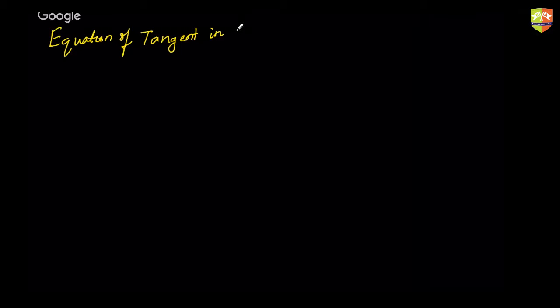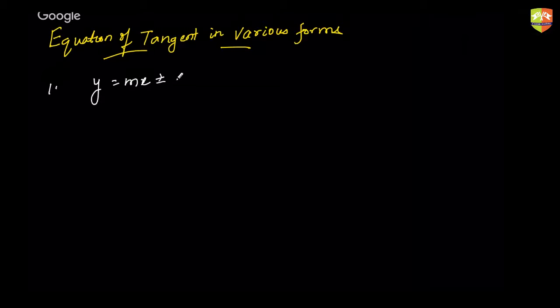Moving on, the next concept is the equation of tangents in various forms. A little while ago we saw the equation of a tangent in slope form: y = mx ± √(a²m² + b²). This is called the slope form.